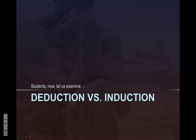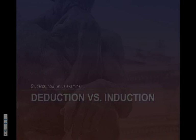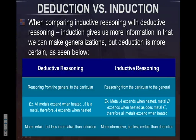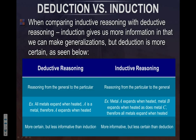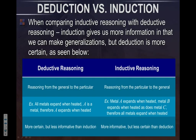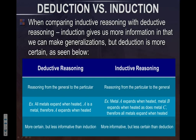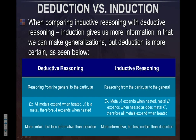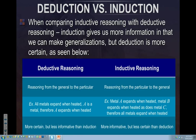Let's compare the two — deduction and induction. Deductive reasoning goes from the general to the particular, and inductive reasoning goes from the particular to the general. For example, 'metal A expands when heated' and 'metal B expands when heated' are two particular examples, and we jump to the conclusion 'all metals expand when heated,' which is an inductive statement.